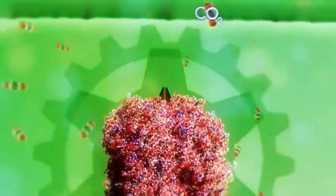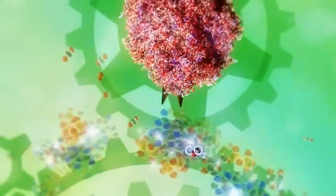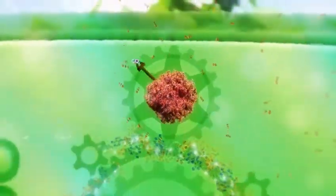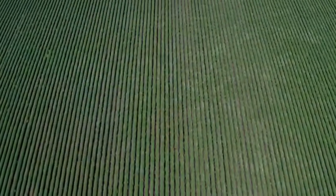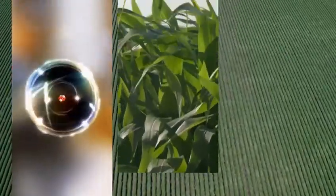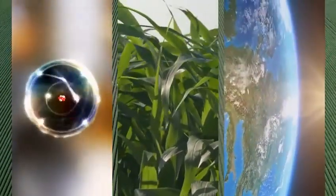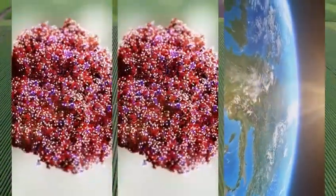Rubisco's job is to grab a molecule of carbon dioxide and feed it into a molecular machine that's building carbon chains. That means any carbon atom that's part of any plant anywhere got there thanks to Rubisco.